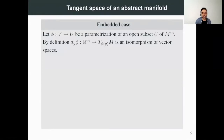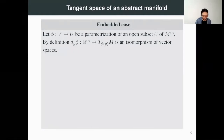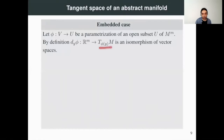Consider a parameterization of an open subset U of an embedded manifold M. Here, big M is the manifold and small m is the dimension. By definition, the differential of the parameterization at the parameter Y is an isomorphism between R^m and the tangent space of M at the point phi applied to Y.